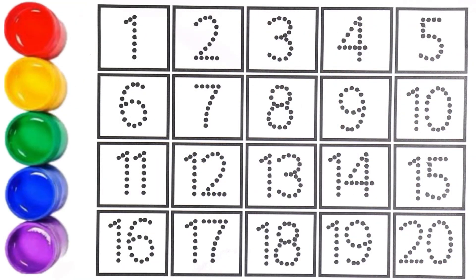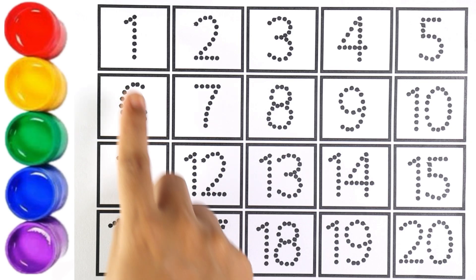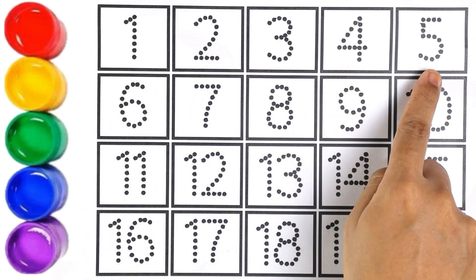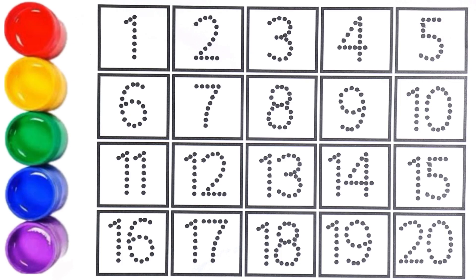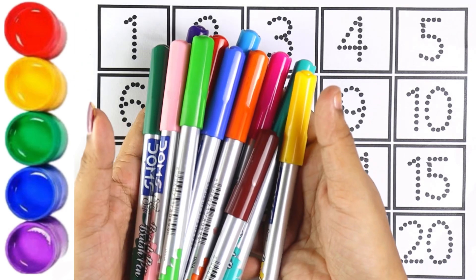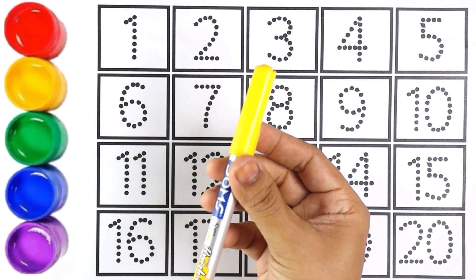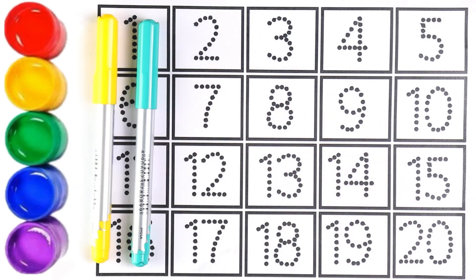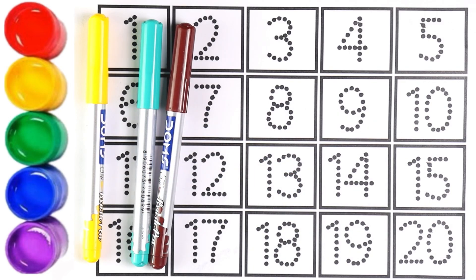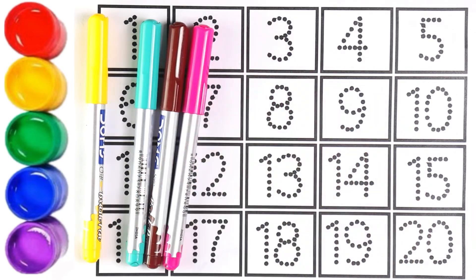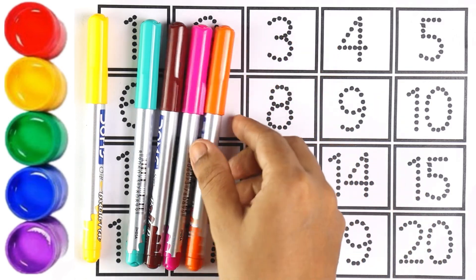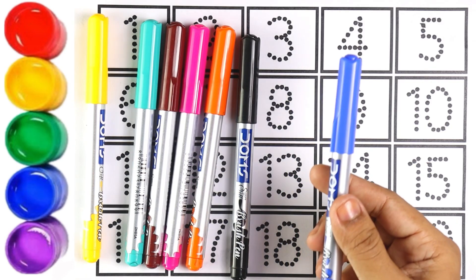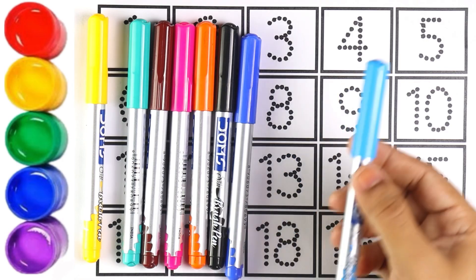Hello guys, welcome to my channel! Today let's learn how to write numbers one, two, three, four, five. Let's start with colors: yellow color, light blue color, brown color, pink color, orange color, black color, blue color, sky blue color.